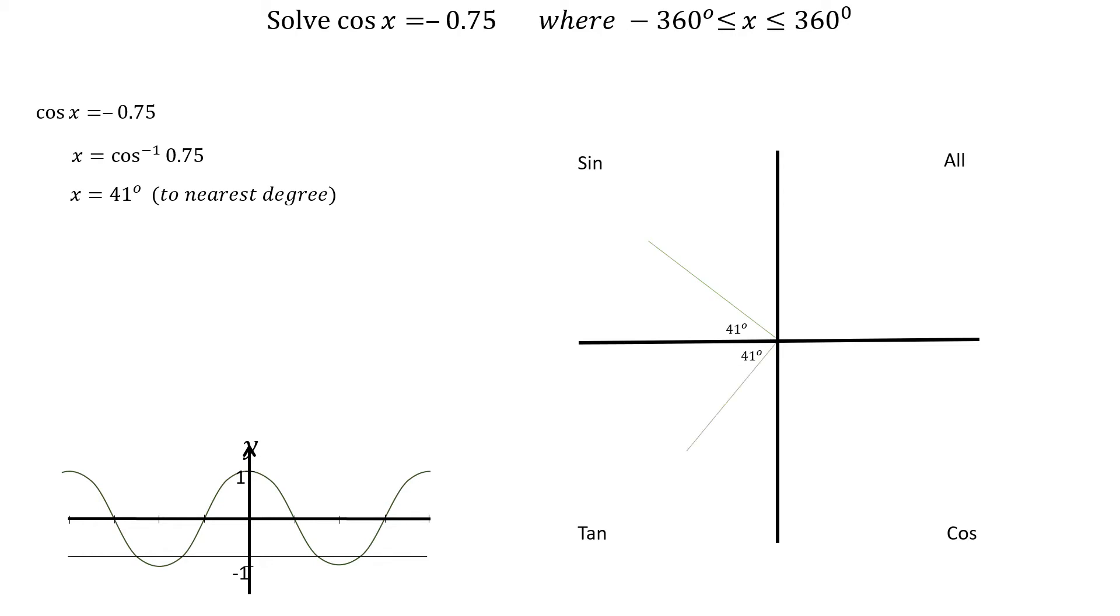Starting with x between 0 and 360 degrees, we go in an anticlockwise direction. The first angle is at 180 degrees minus 41 degrees, which is 139 degrees. The next angle is at 180 degrees plus 41 degrees, which is 221 degrees.